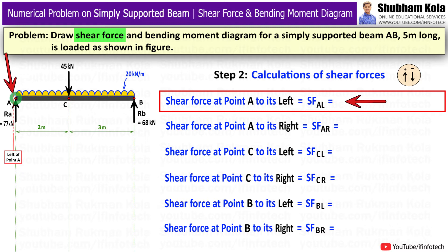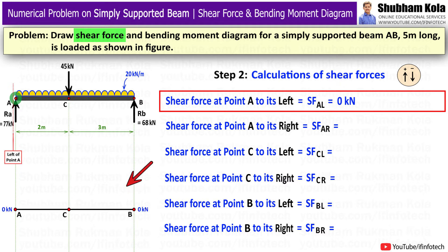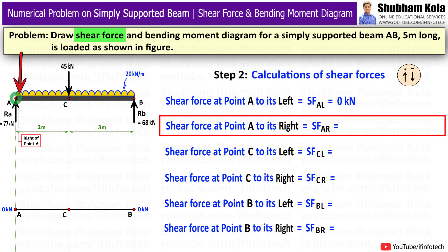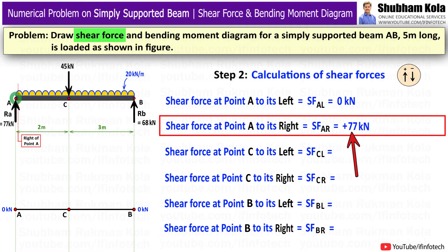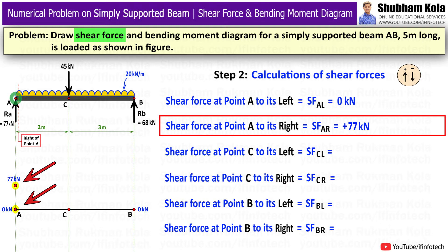At points A and B, there are support reaction forces Ra and Rb, which are point loads, so we calculate shear force at left and right of A and B. At point C, there is also a point load, so we calculate left and right of C. Shear force at A to the left: there is no force acting, so SF at A left equals 0. I draw a horizontal reference line of 0kN and mark this point. Shear force at A to the right: reaction force Ra acts upward, so SF at A right equals +77kN. I mark this point above the reference line and connect the two points with a vertical line.